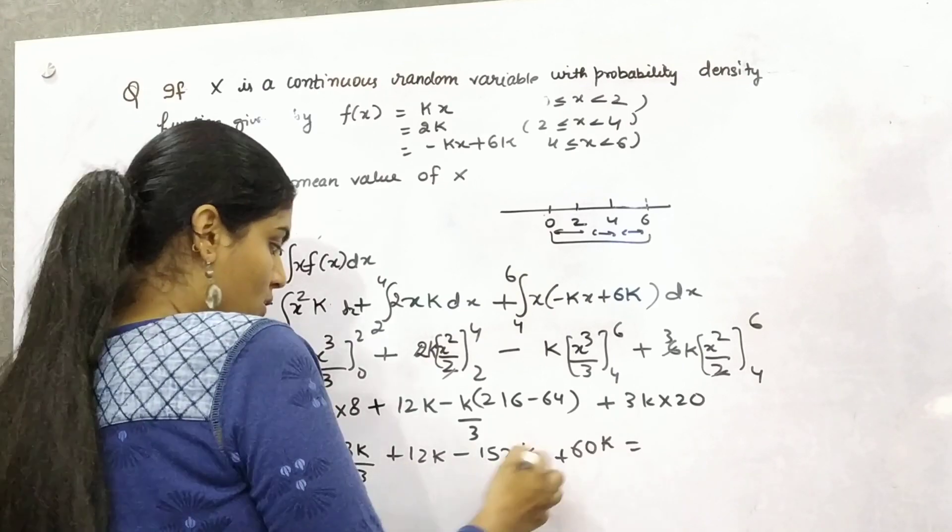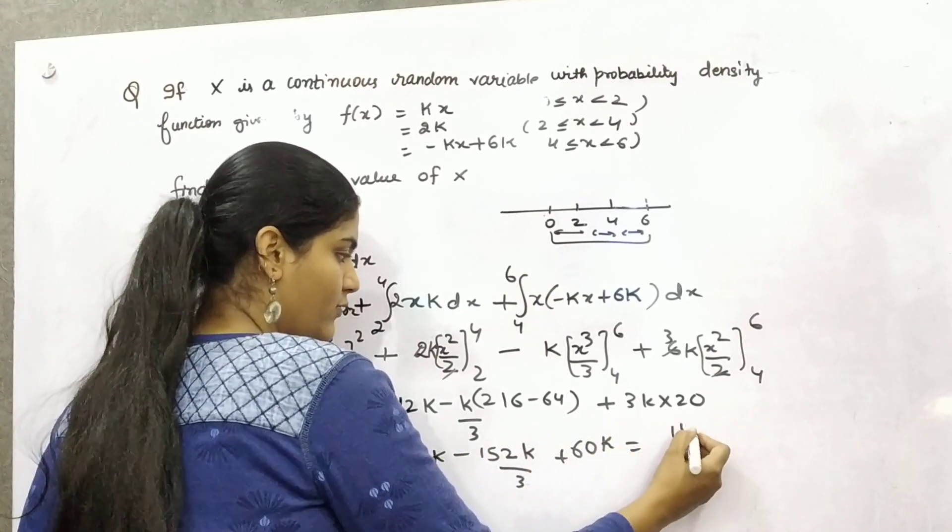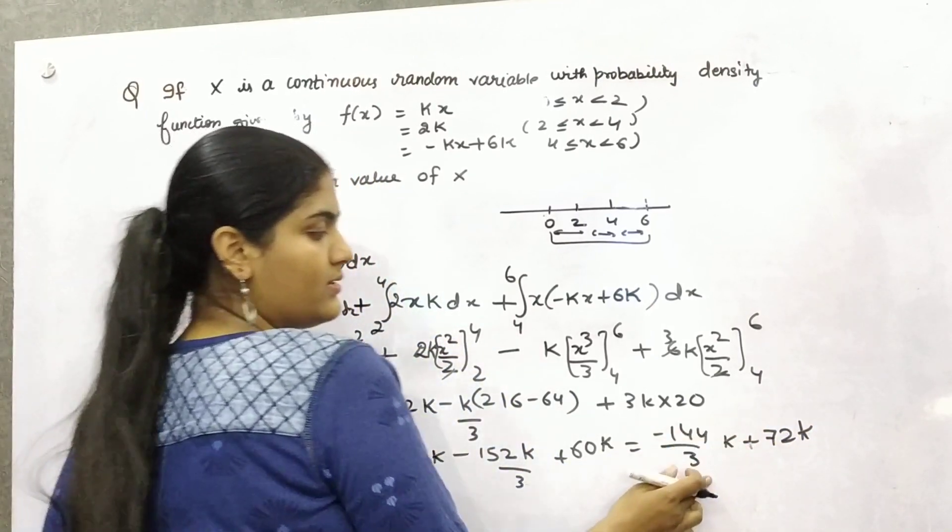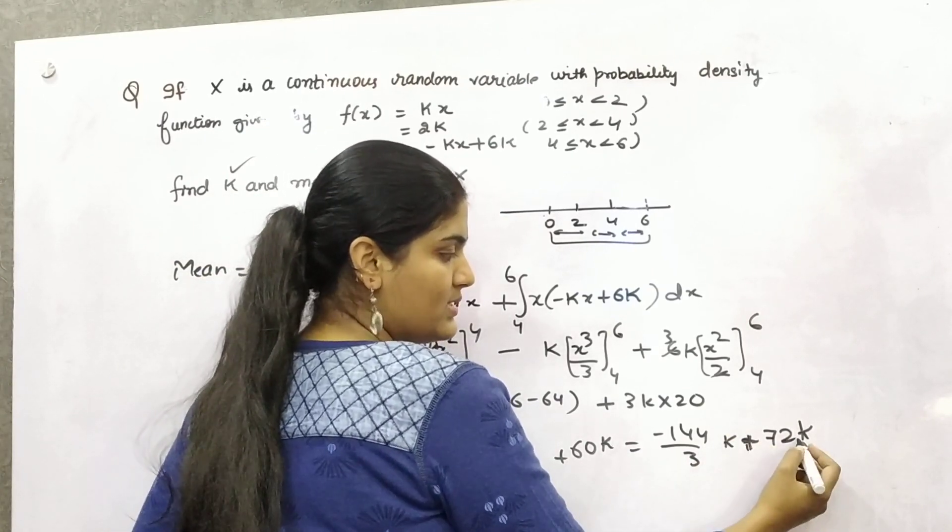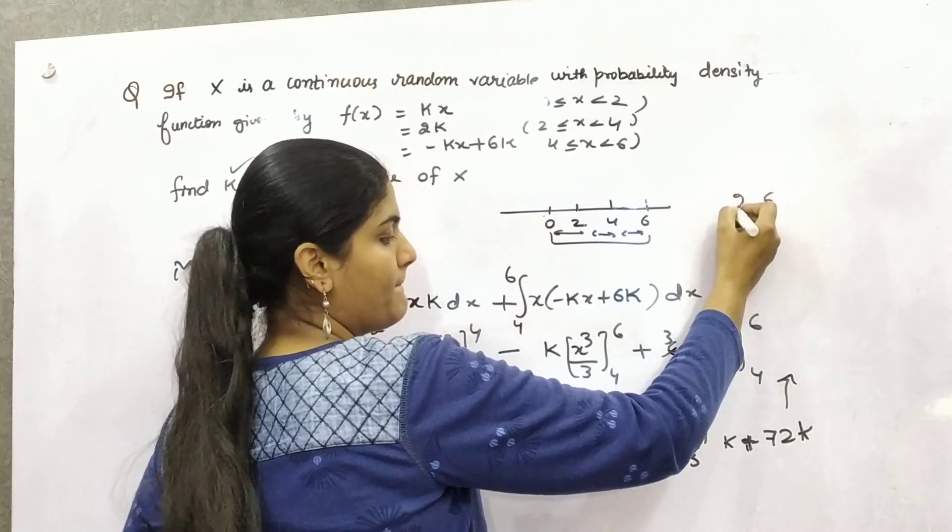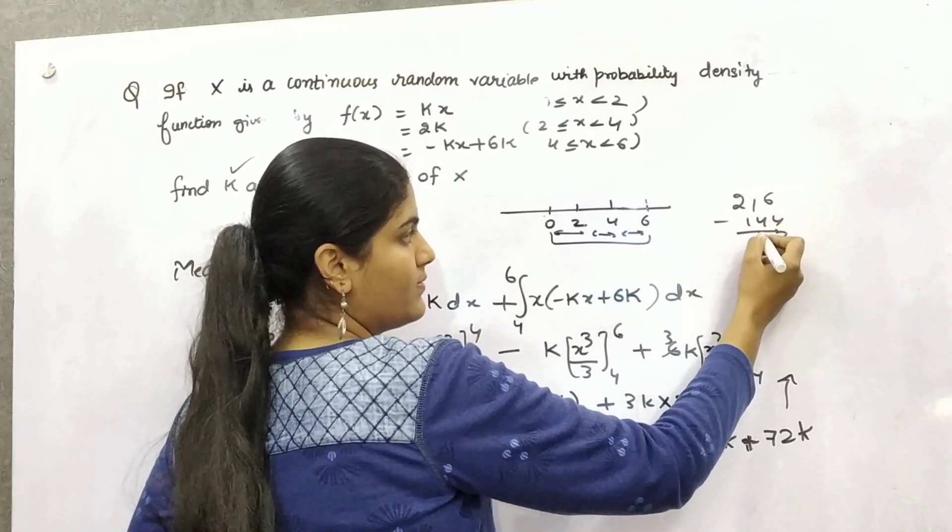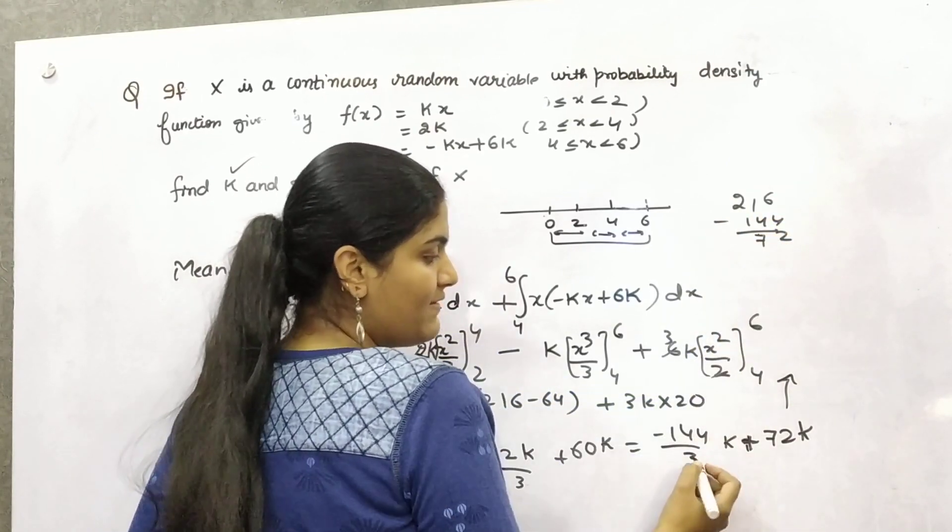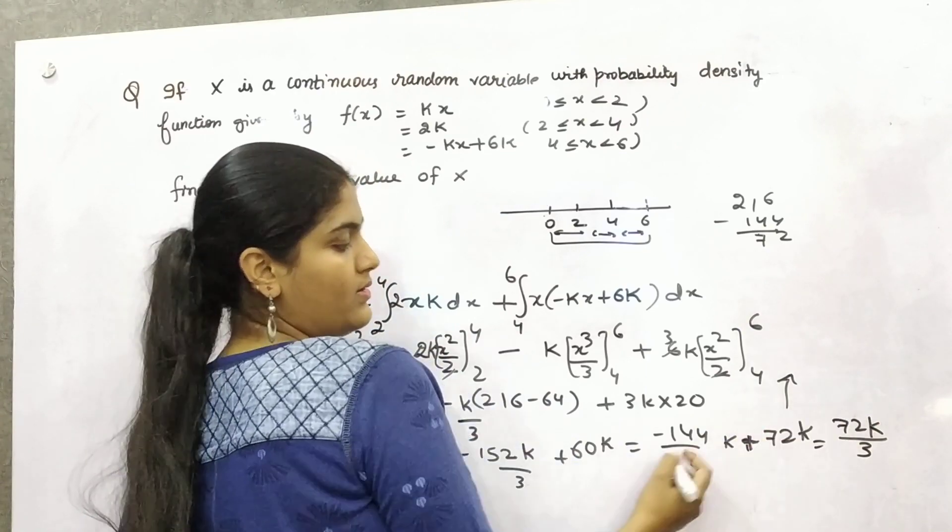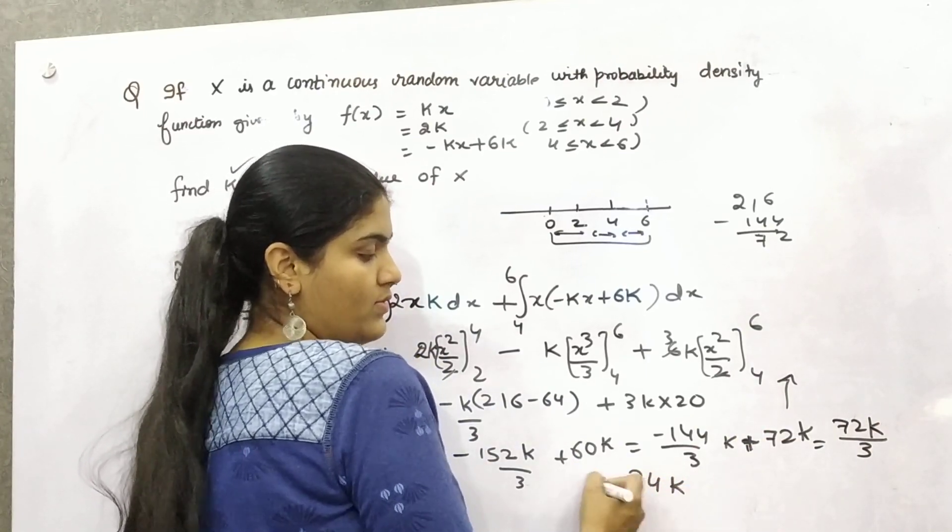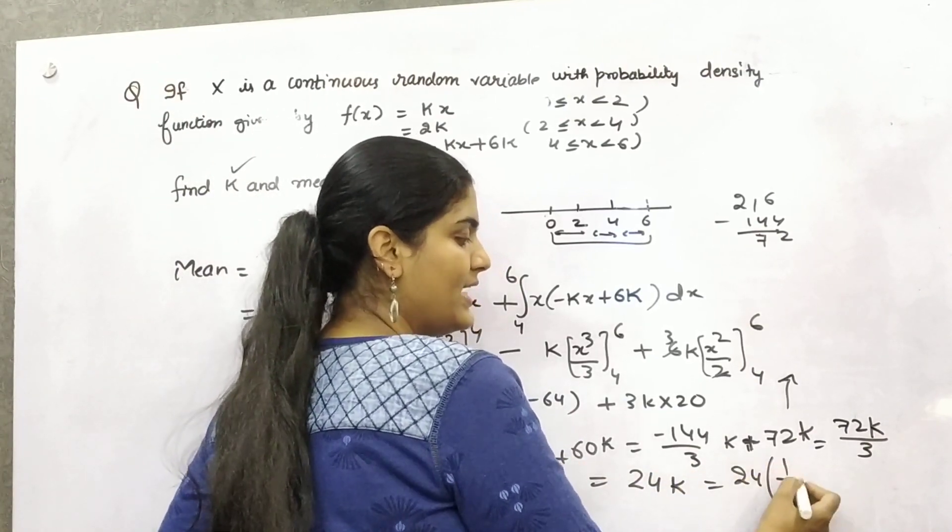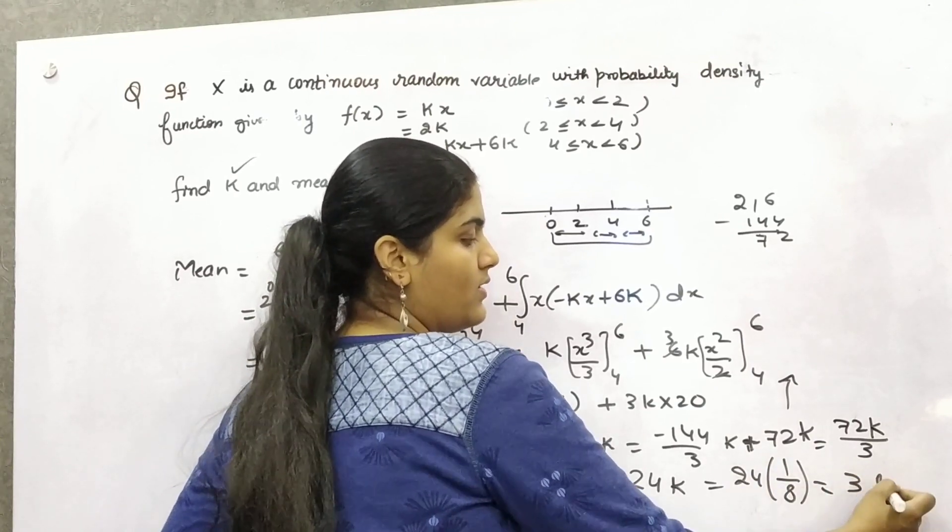So 8k by 3 plus 12k. This would be 6 minus 4 is 2, 216 minus 64 is 152, 152k by 3. This would be 60k. You can take LCM here. So this would be 12 minus 8 is 4, minus 152 plus 180 is minus 144 by 3k, and this is 72k. So this would be 72k by 3. That means 3 into 6, 24k. And you have got the value of k as 1 by 8 initially. So 8 times 3, so 3 is your mean.